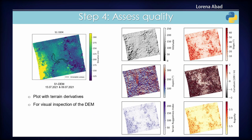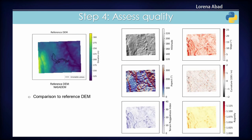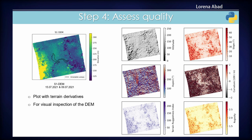I've also included terrain derivatives so you can quickly see how the DEM would look in practice. For comparison, the NASA DEM is quite nice, while the Sentinel-1 DEM is very noisy, but you can still get a general idea of the terrain.